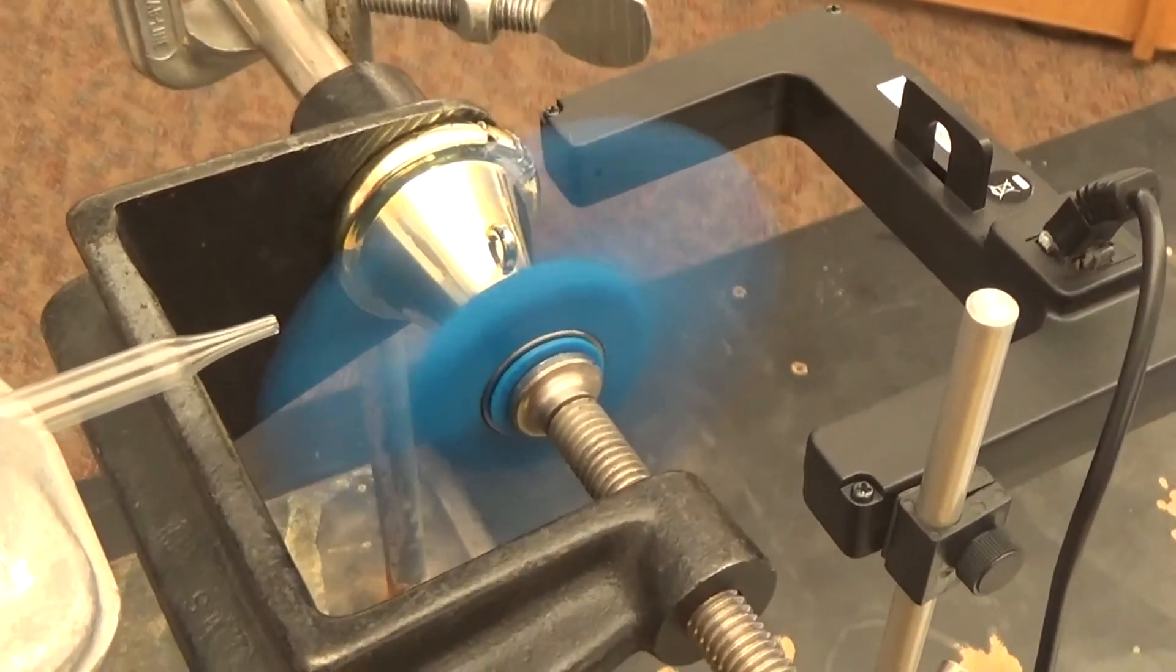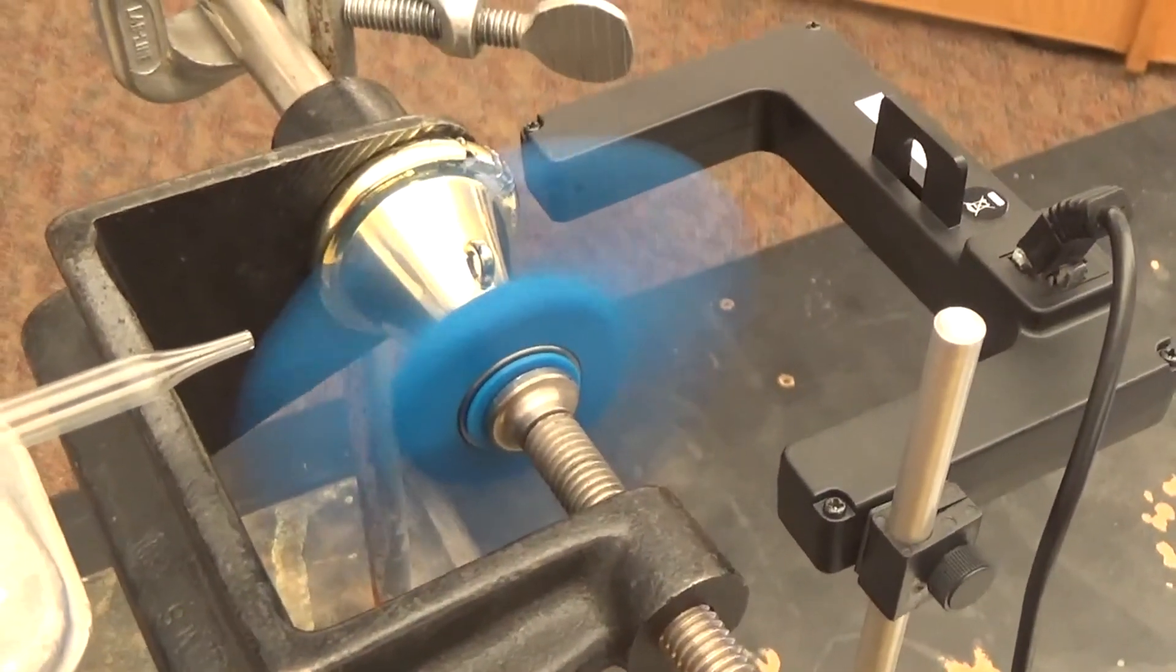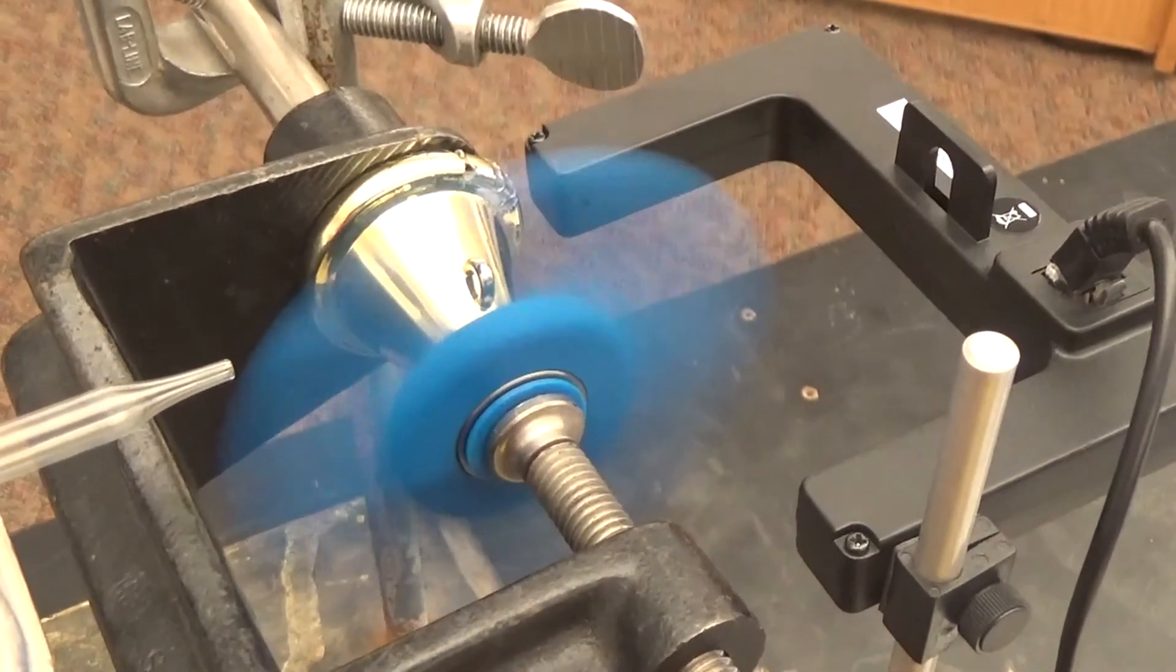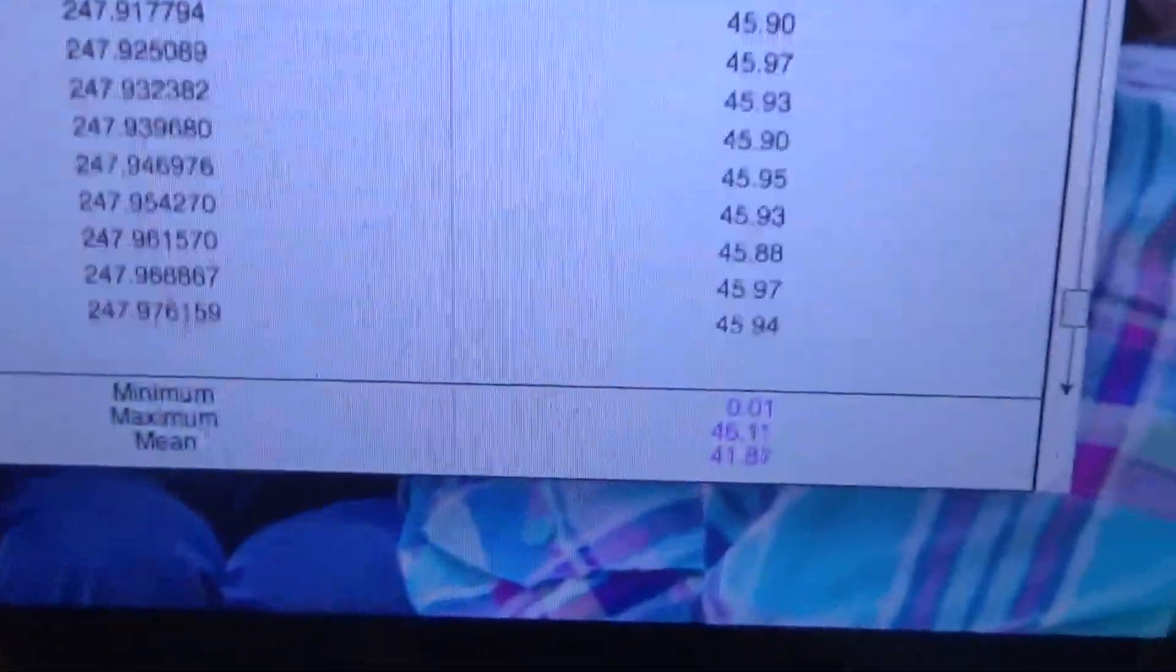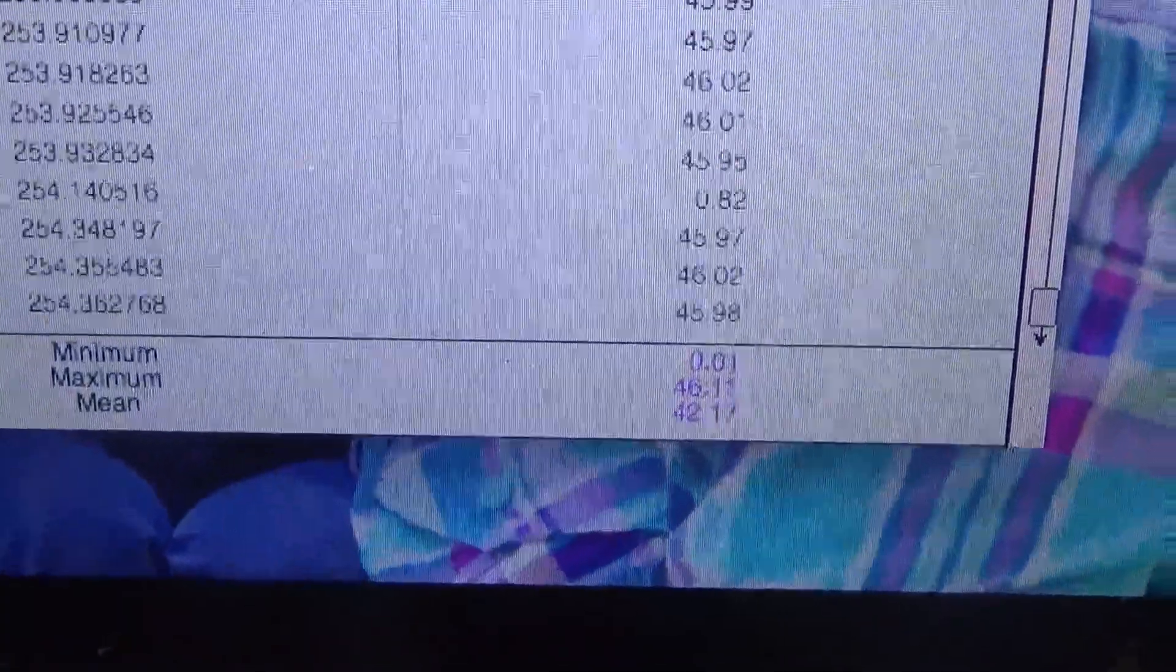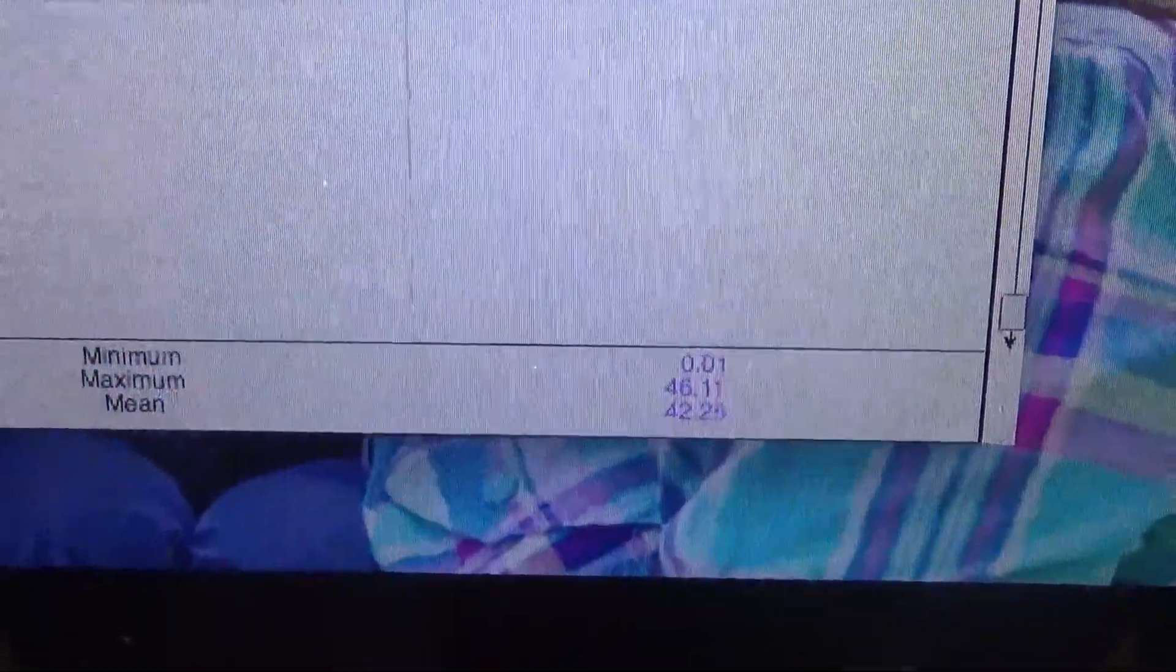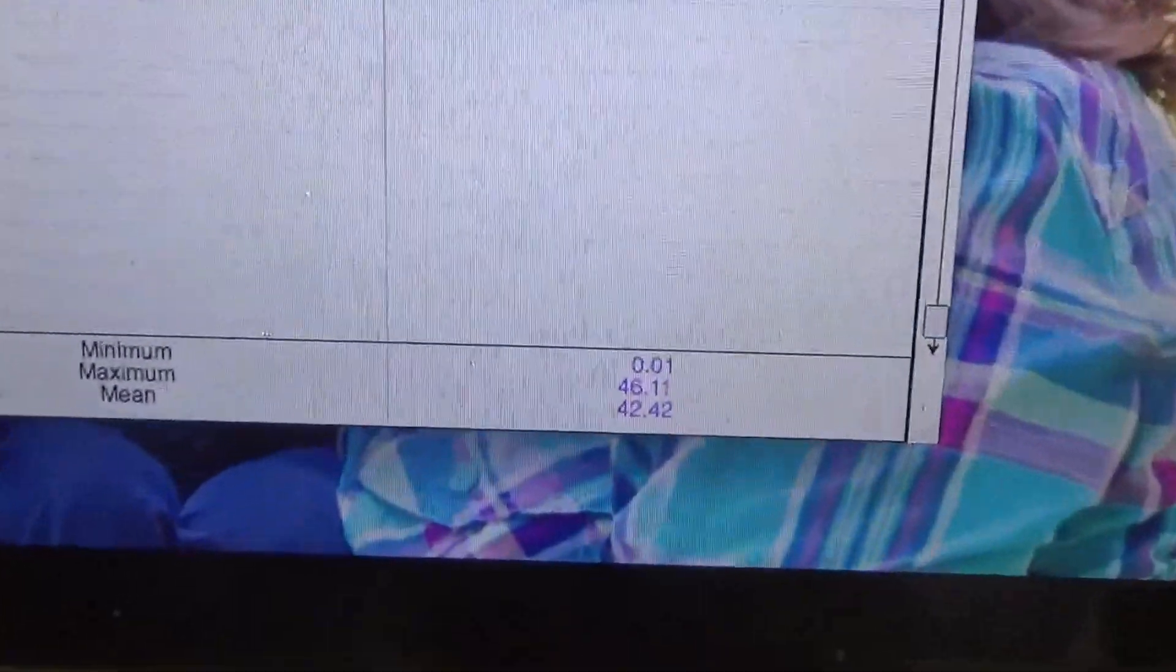And this fidget spinner actually doesn't have a very good ball bearing in it. It's the only one I could find at the time. I'm ordering some more that are supposed to be a lot faster. Maybe we'll review this video later and see what it is. So the mean is still going up. 42. I've done this earlier and it did max out at about 45 and a half.